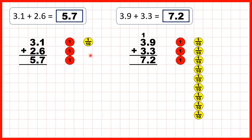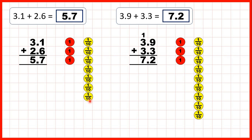We can also show what we did using place value counters. For this first question we started with 3.1, so that's 3 wholes and 1 tenth. First we added 6 tenths — 1, 2, 3, 4, 5, 6 tenths. That gives us 7 tenths altogether, and then we added 2 wholes, which gives us 5 ones altogether, giving us our answer of 5.7.